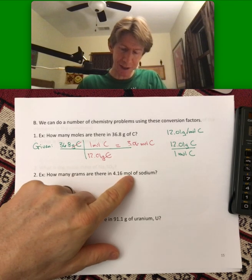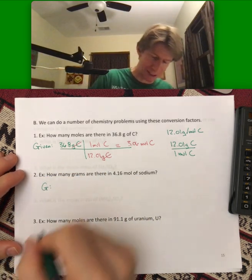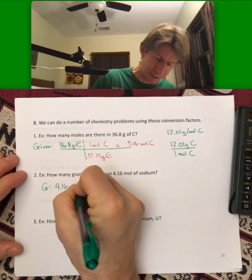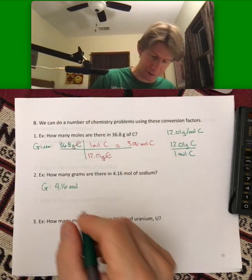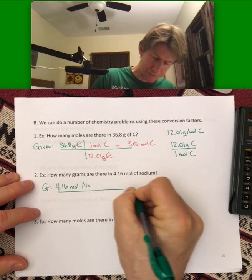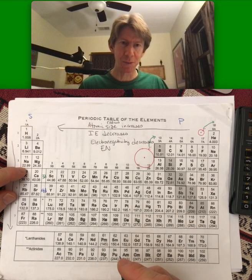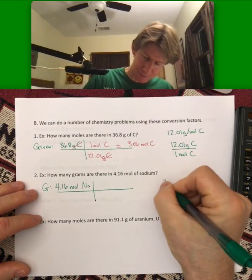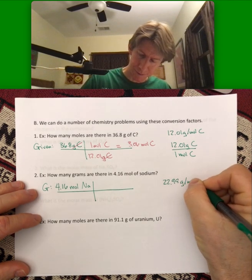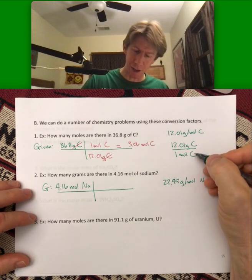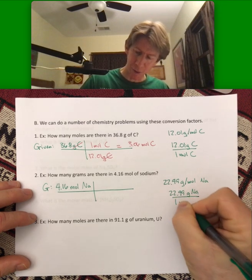Now our next one. How many grams are there in 4.16 moles of sodium? So, we're given 4.16. And, you can write out sodium, if you've memorized that sodium is N-A, then that's fine to write to. The molar mass for sodium is going to be 22.99 grams per mole.